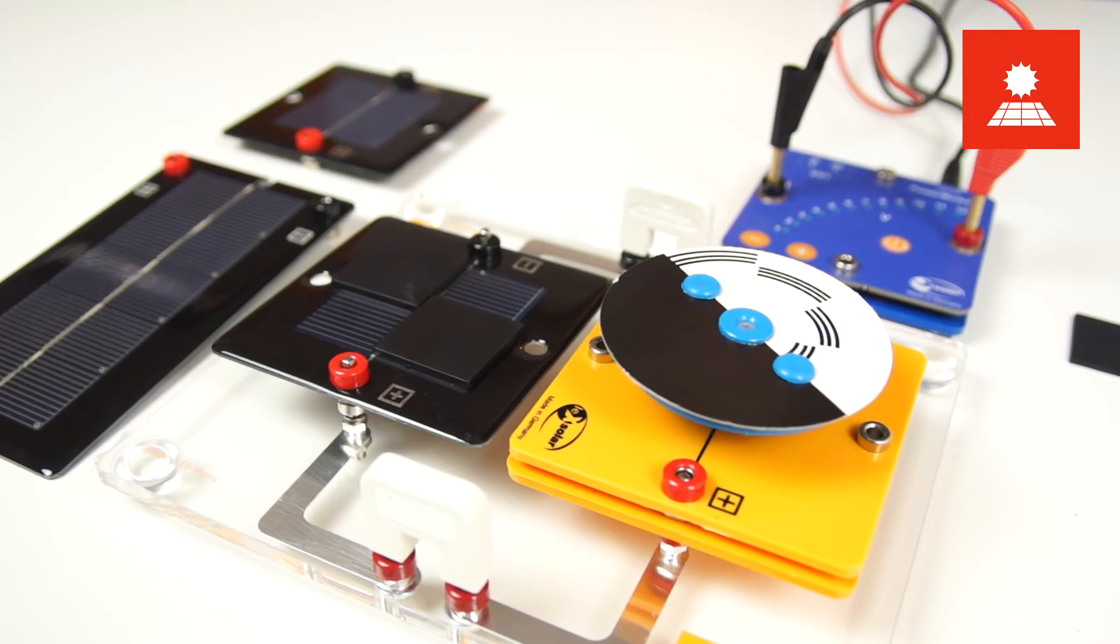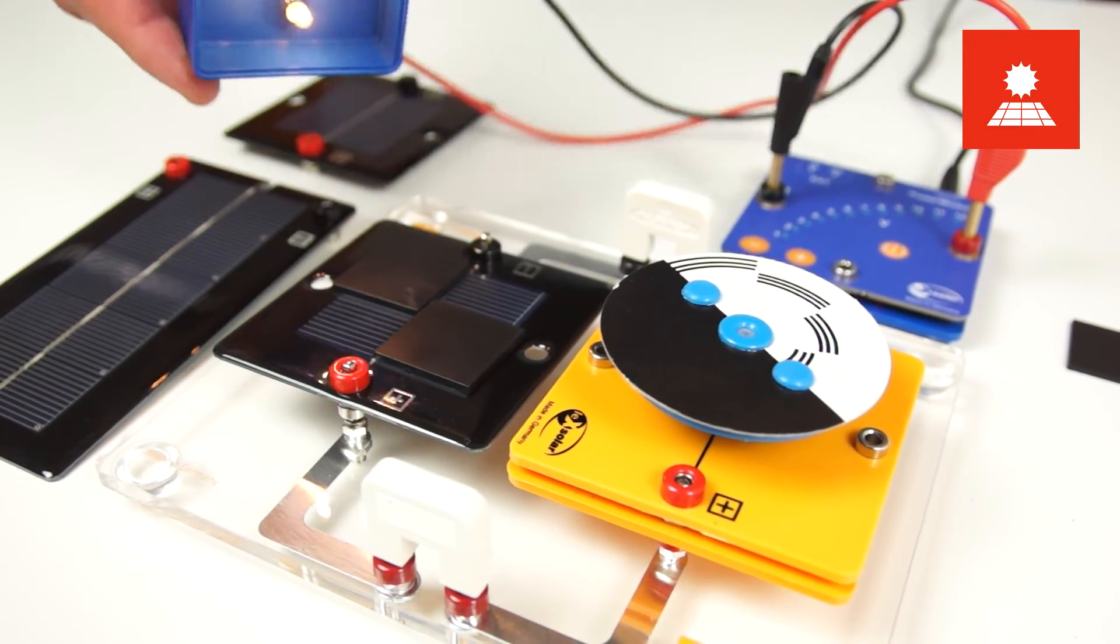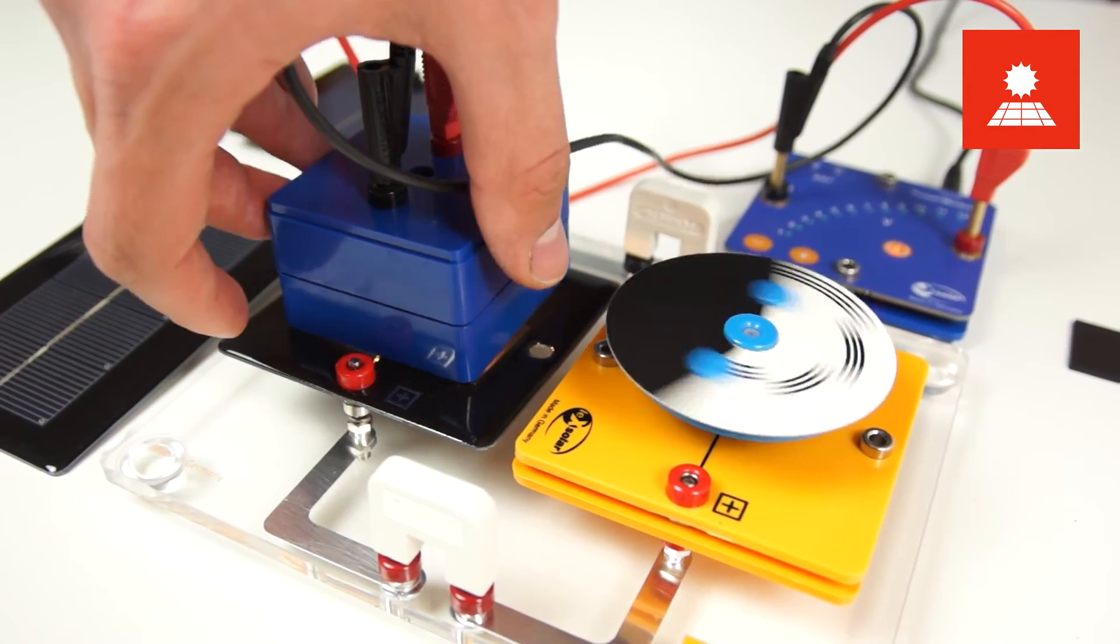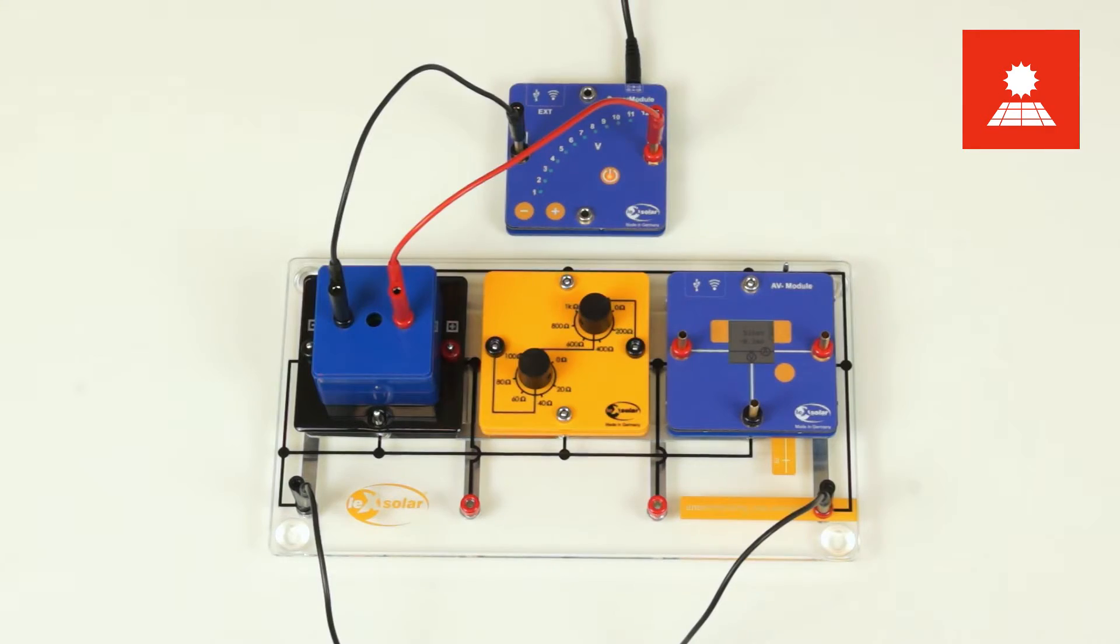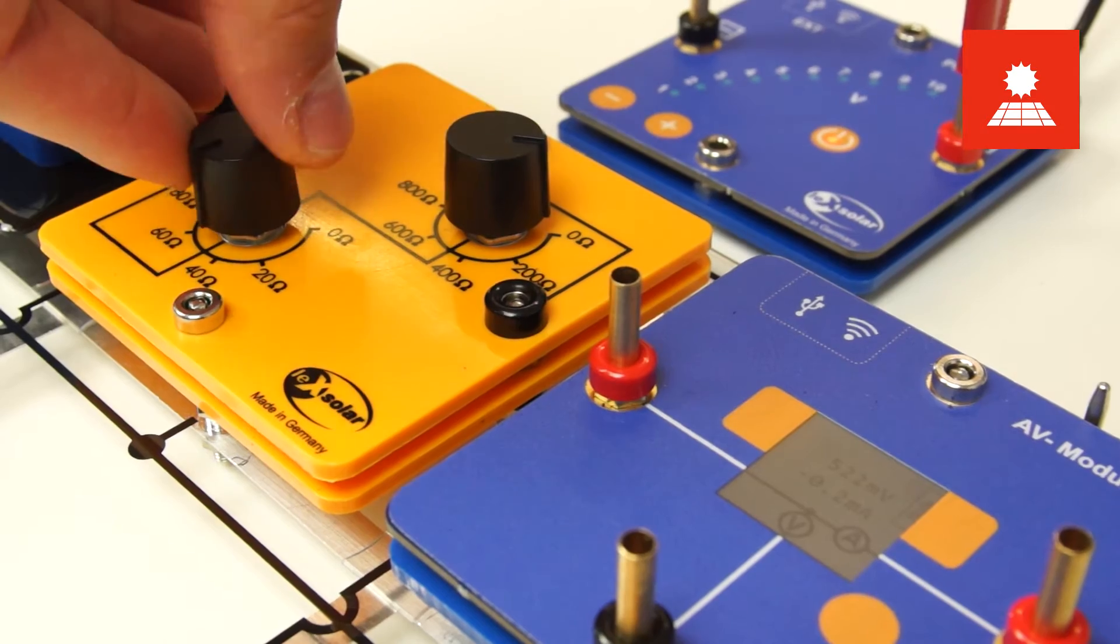With the solar cell covers and the illumination module, the dependency of the solar cell power on active area or light intensity can be investigated. For the determination of the characteristics, the potential meter module can be used as a variable load.